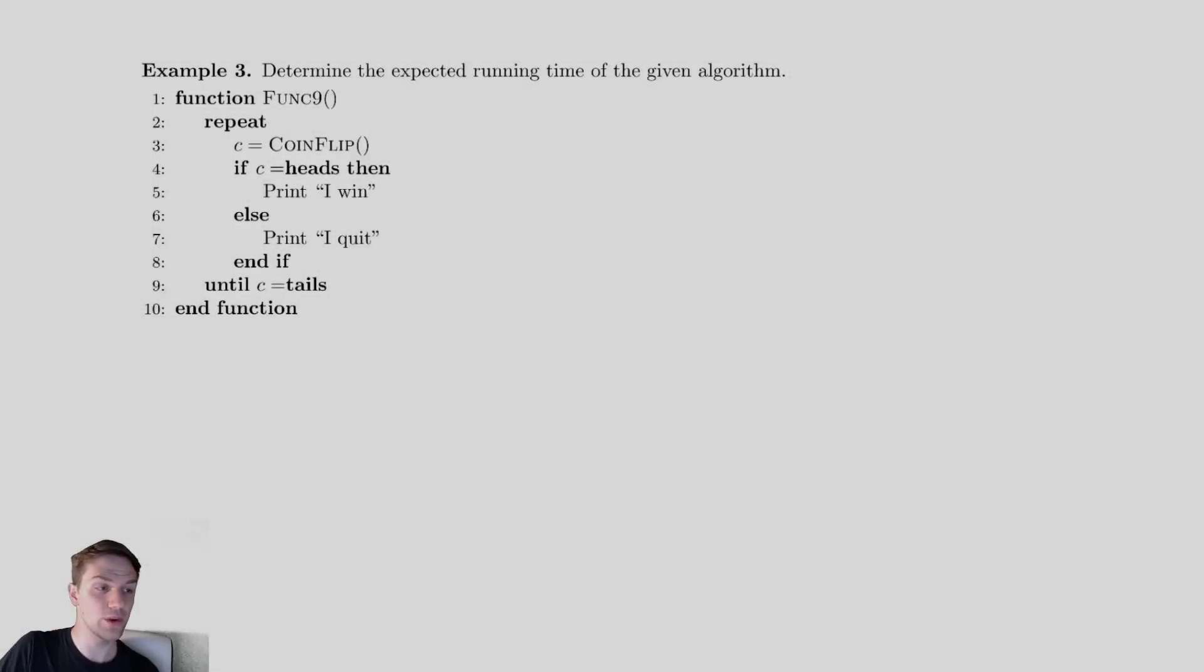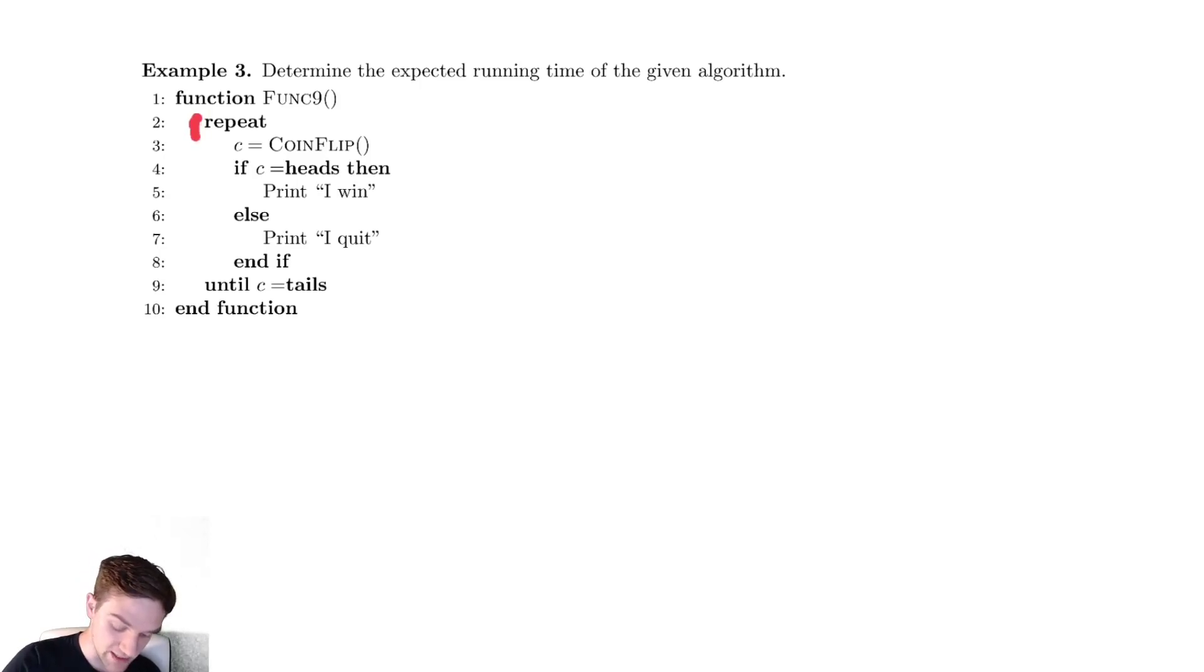For our next example, we have a totally different type of function that involves several things we may not have seen before. Firstly, in our pseudocode, we are going to have some sort of strange command here, repeat until. This is like a do while loop. We're going to iterate on this code until eventually something is true.